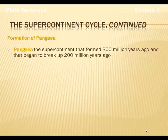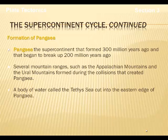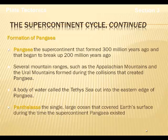Formation of Pangaea. Pangaea is the supercontinent that scientists think existed about 300 million years ago. Several mountain ranges we see currently — for example, the Appalachian Mountains and the Ural Mountains — formed during the creation of Pangaea. The Tethys Sea was thought to have cut into the eastern edge of Pangaea. Panthalassa is the single large ocean that scientists believe may have covered the rest of the planet during the existence of Pangaea.